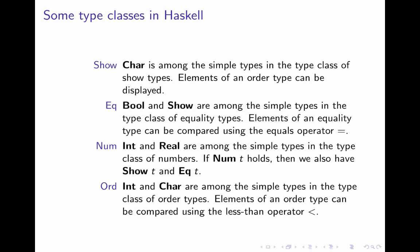In fact, all show types, all members of the show type class are also in the equality type class. Then there's the number type class. It has members such as Int and Real. They're among the simple types in the type class of numbers. And moreover, if t is a number type, so it's a member of the type class Num, then it's also in the Show class and it's also in the equality type class. And finally, we have, as a last example, the class of order types. Elements of an order type can be compared using the less than operator.